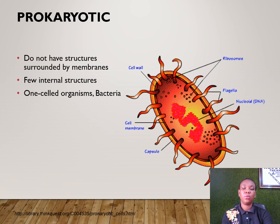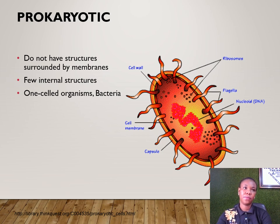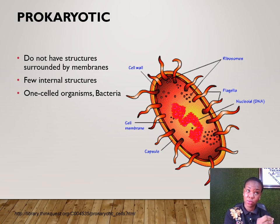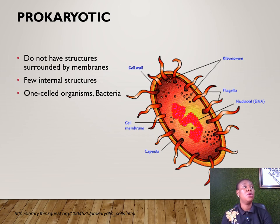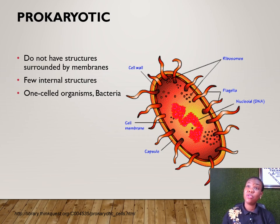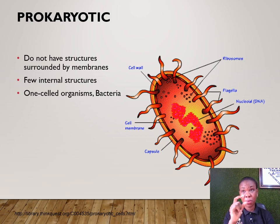Prokaryotic cells usually do not have surrounding membranes. They have just a few internal structures and are usually from bacterial cells. They are single-cell organisms. When you culture bacterial cells in the lab, you see a lot of cells — each one standing on its own as an individual.